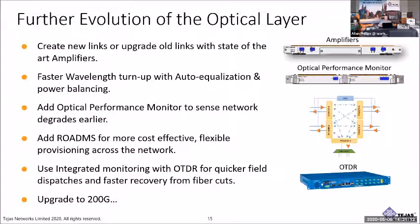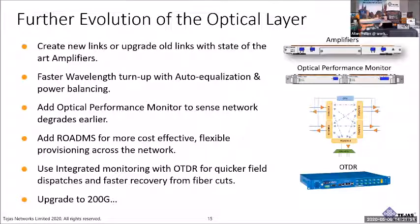If at a certain point you want to replace the older vendor in your network, we have amplifiers to plug in and replace on a link-by-link basis. We can give you new technologies like auto-equalization and power balancing that allow you to turn up a wavelength faster. We can introduce ROADMs into your network, optical performance monitoring so you can see if the signal degrades, and even OTDRs. All of this can be introduced as an evolution path in the future — so it's not just 100 gig today; it's having a vendor you can grow with.